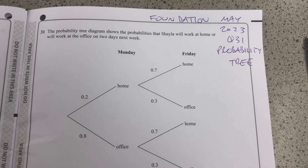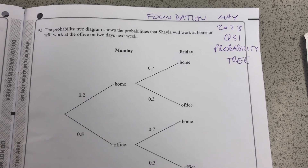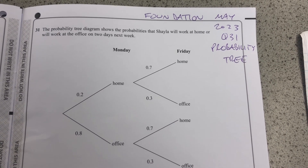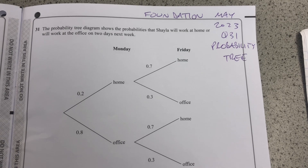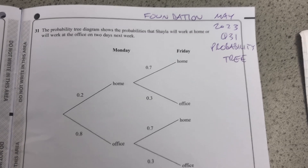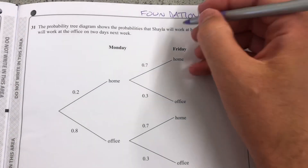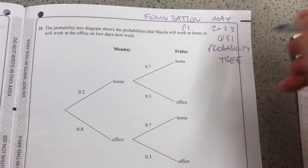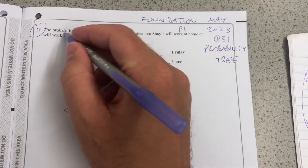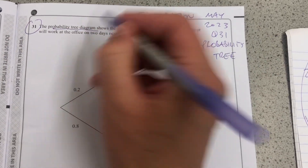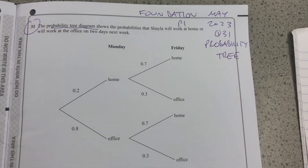Hello and welcome to Martin Maths. We're going through the May 2023 GCC Maths Papers, and this is Foundation Paper 1, the non-calculated paper, question 31, all about probabilities and a tree diagram.